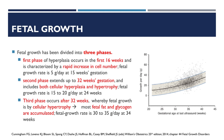Fetal growth has been divided into three phases. The initial phase of hyperplasia occurs in the first 16 weeks and is characterized by a rapid increase in cell number. The second phase, which extends up to 32 weeks' age of gestation, includes both cellular hyperplasia and hypertrophy. After 32 weeks, fetal growth is by cellular hypertrophy, and it is during this phase that most fetal fat and glycogen are accumulated.